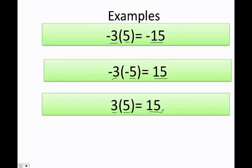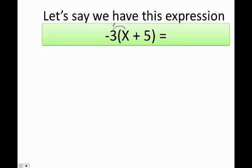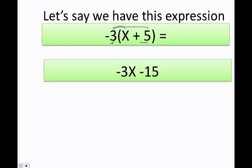You will apply this for the rest of your life, and I'm not kidding. Let's do more. Let's say we have this expression. The first thing I need to do is distribute the negative 3. Negative times positive gives me a negative, and negative times positive again gives me a negative. So: negative 3 times x equals negative 3x, and negative 3 times positive 5 equals negative 15.